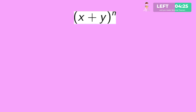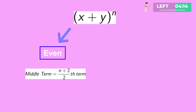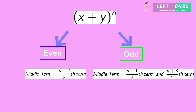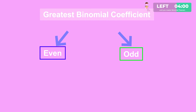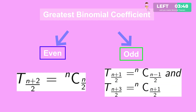In the binomial expansion of (x plus y) to the power n, the middle term depends on the value of n. If n is even, the total number of terms is odd and there is only one middle term: the (n plus 2) by 2 th term. If n is odd, the total number of terms is even and there are two middle terms: the (n plus 1) by 2 th and (n plus 3) by 2 th terms. The middle term always carries the greatest binomial coefficient: nC(n/2) when n is even, and nC((n-1)/2) and nC((n+1)/2) when n is odd.